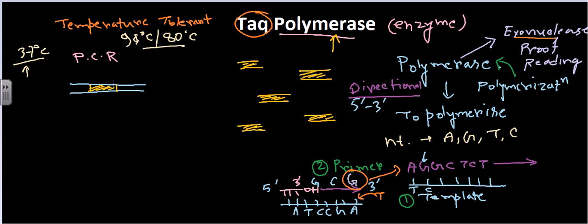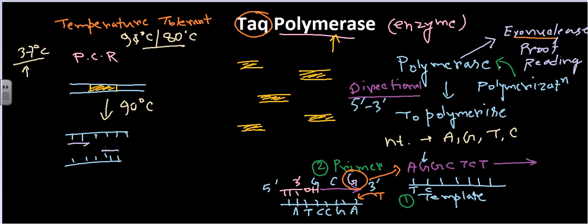This is important because during PCR we first dissociate both strands from each other by heating to around 90°C, which denatures the DNA strands. Then we anneal our primer — which is required for initiation — at about 54–55°C. After annealing the primer, we add our polymerase enzyme.